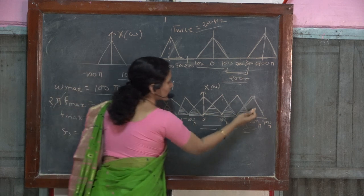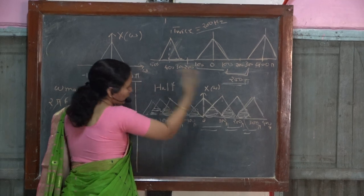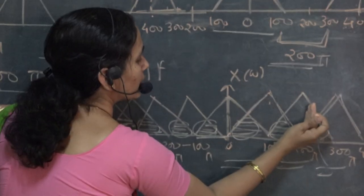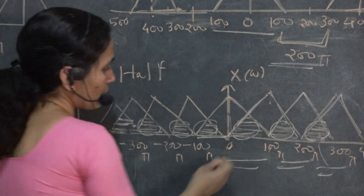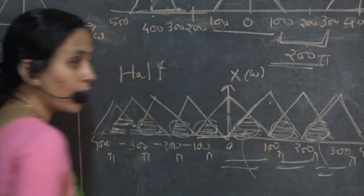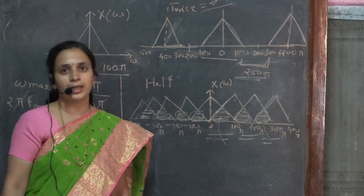See here, the higher frequency components are taking the form of the lower frequency components. This is nothing but aliasing, where the higher frequency components are taking the form of the lower band. Why has this happened? Because we have not followed the sampling criteria.